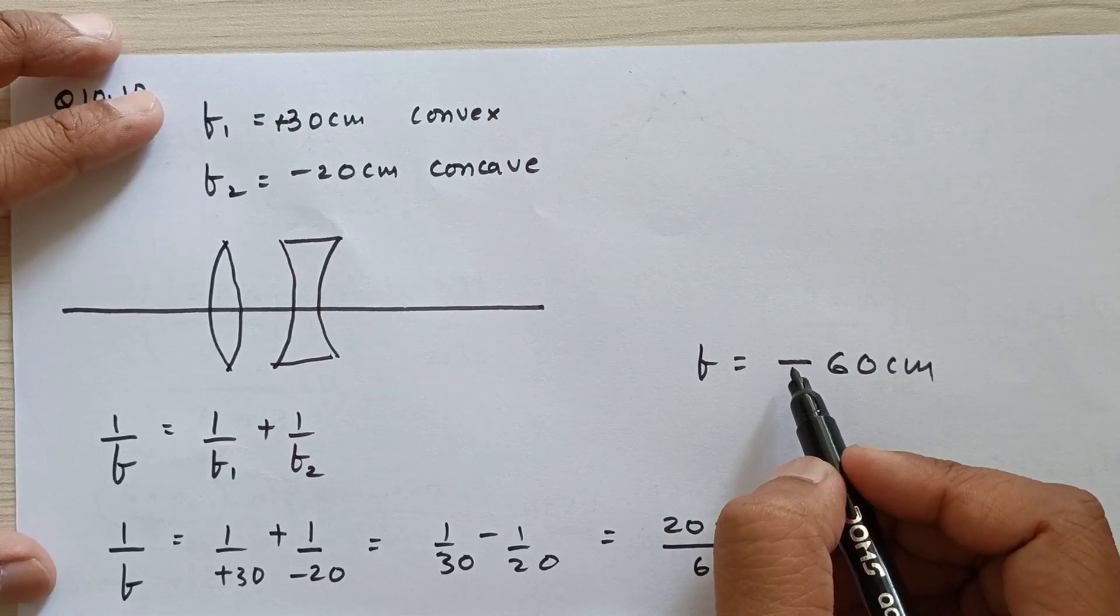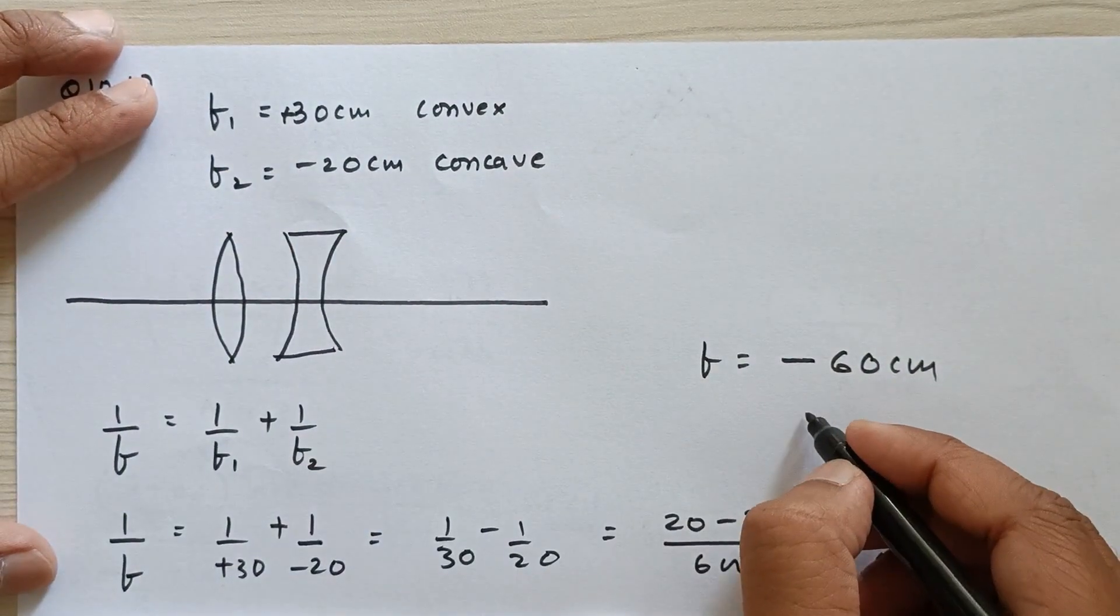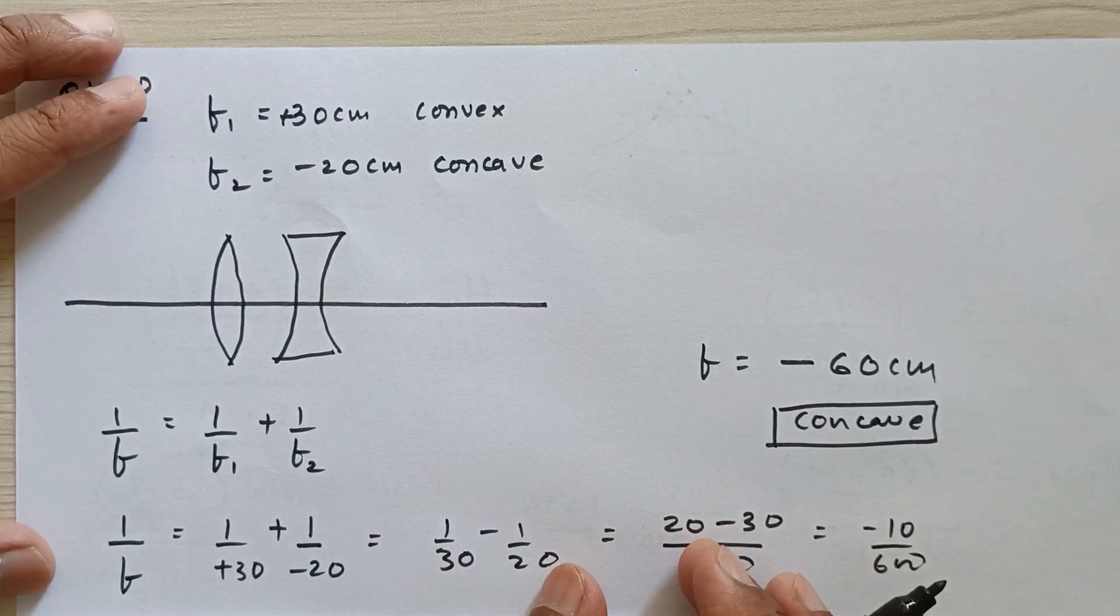The negative sign indicates that this entire combination is concave in nature, meaning it is diverging in nature.